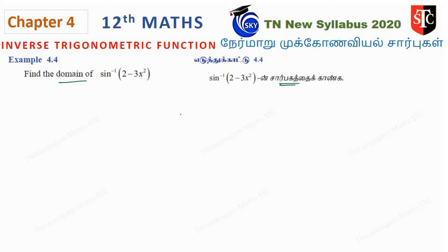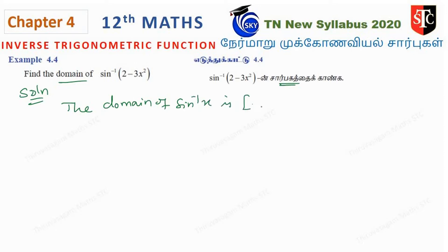So we need to solve the problem. First, we need to find the domain. The domain of sin inverse of x is minus 1 to 1. This is the domain of sin inverse. Now, we need to solve the domain value. Sin inverse of x, where x is 2 minus 3x squared. So: minus 1 less than or equal to 2 minus 3x squared less than or equal to 1.